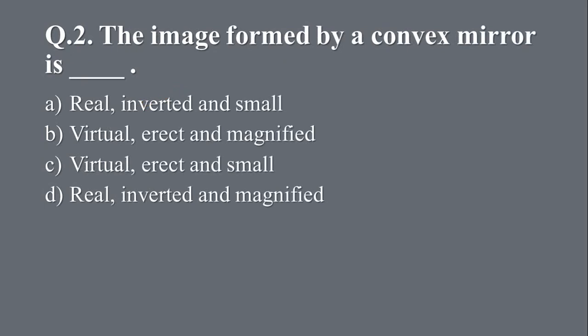Question 2: The image formed by a convex mirror is blank. Option A, real, inverted and small. B, virtual, erect and magnified. C, virtual, erect and small. D, real, inverted and magnified. And the right answer is C, virtual, erect and small.